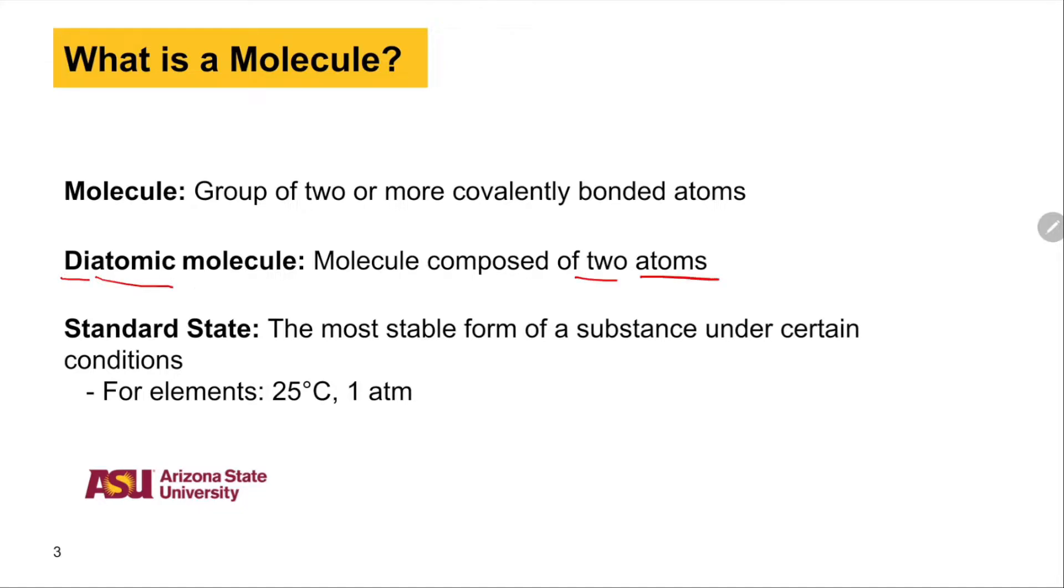These two molecules can be the same or different elements. For example, carbon monoxide is a diatomic molecule because it is made up of two covalently bonded atoms, carbon and oxygen.